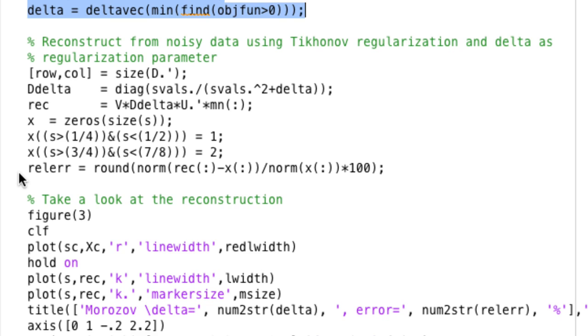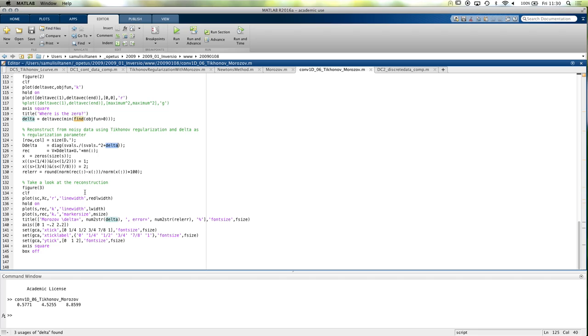And then, so then we have the alpha, or I seem to call it delta here. Well, sorry, the notation seems to be different from the book because, yeah, this code was written before the book, so the notation seems to have changed. Anyway, that's how Morozov works. Any questions?